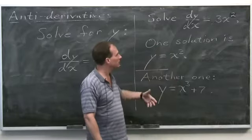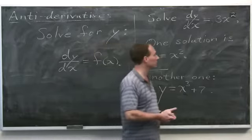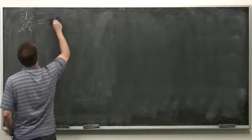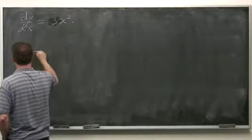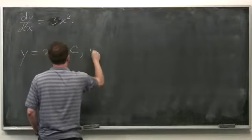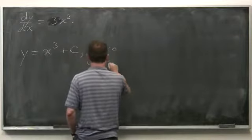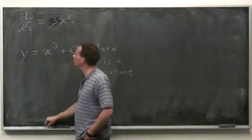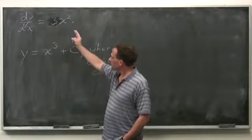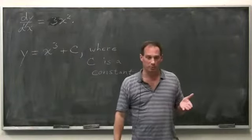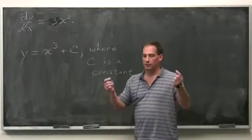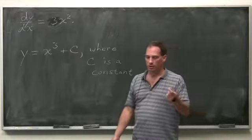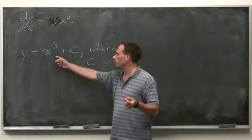All I did was add a constant. What we'd like to know is the general solution. Is every solution of dy/dx equals 3x squared of the form x cubed plus a constant? And the answer is yes, on any interval on which the differential equation is supposed to be satisfied. Because we have a theorem — a consequence of the mean value theorem — that if two functions defined on an interval have the same derivative, then they differ by a constant.